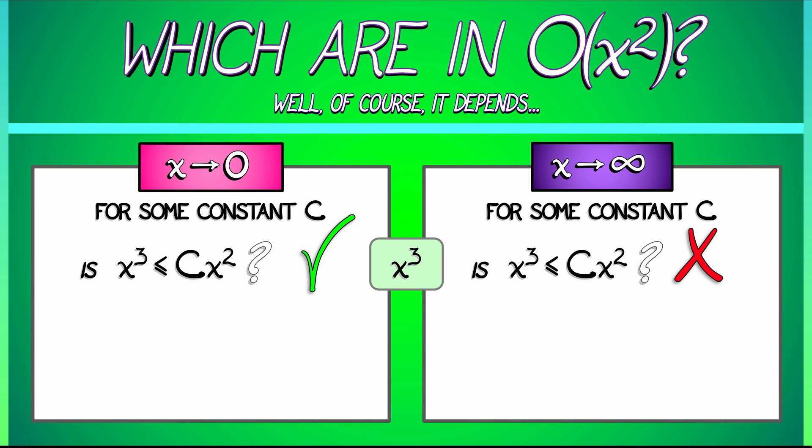Well, let's think. Consider the function e to the x. Is that in big O of x squared? Well, as x goes to infinity, absolutely not. We know that the exponential functions absolutely dominate all polynomial functions. There's no way that e to the x is less than any constant times x squared. So, e to the x? Not in big O of x squared as x goes to infinity.